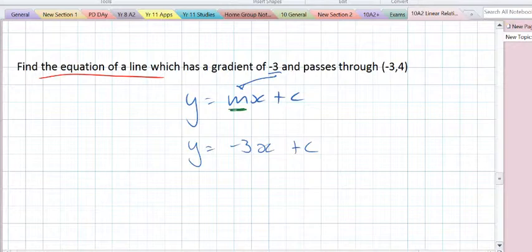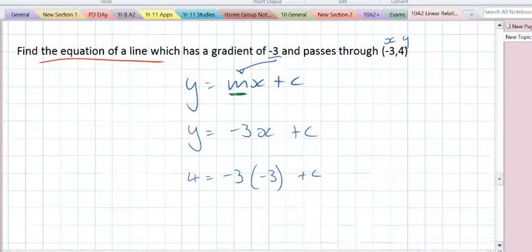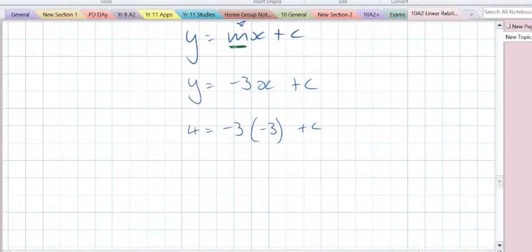When we see c and we've done m, then we need to think substitute. This is our point, that's its x and that's its y. We substitute in any point, we're only told one, so we can just choose that one. y is 4, that equals minus 3, that's the m, multiplied by the point x equals minus 3, plus c. 4 equals minus 3 times minus 3 is 9 plus c. c is equal to 4 minus 9, which is negative 5.